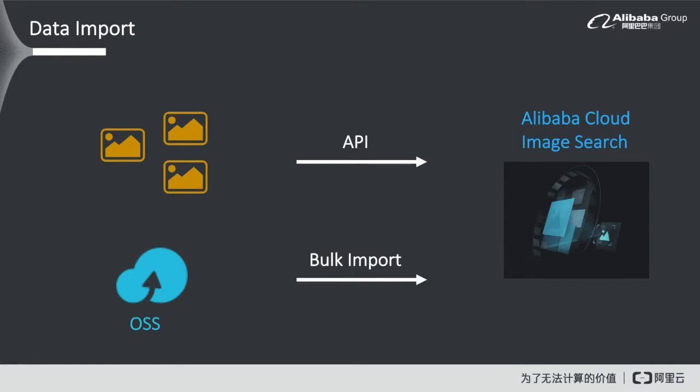Before I give you an example in a live demo, let us quickly take a look at how the data import works. It's really simple — you can upload your own custom data set via simple API calls, or you can upload them onto our object storage service and then do a bulk import into Alibaba Cloud Image Search. This will then be the custom data set used by the Image Search service to find products based on your data.